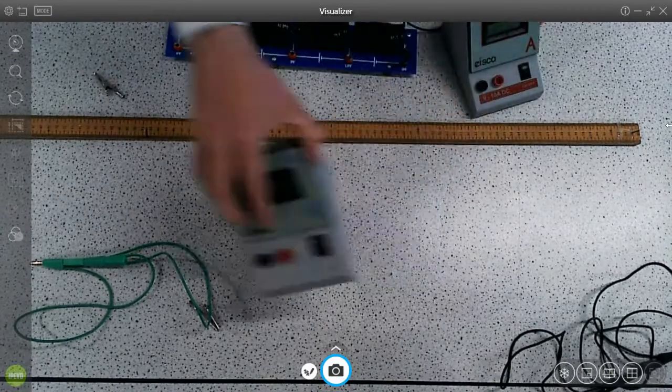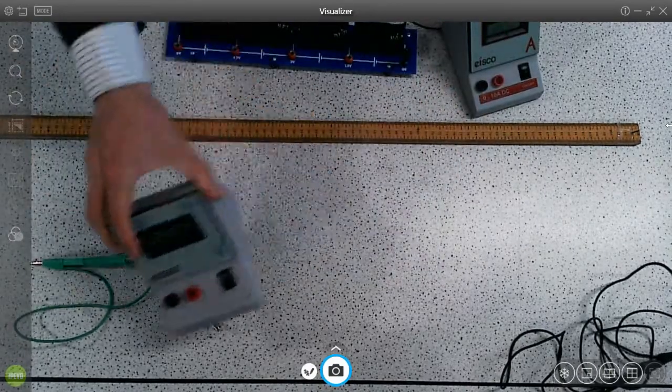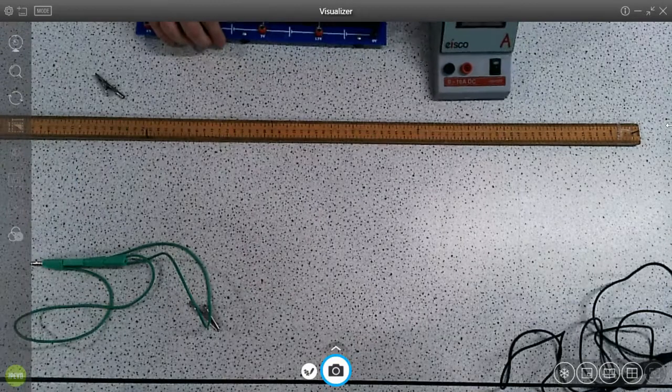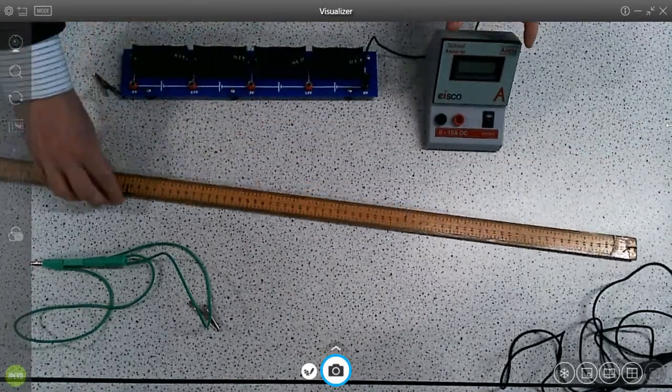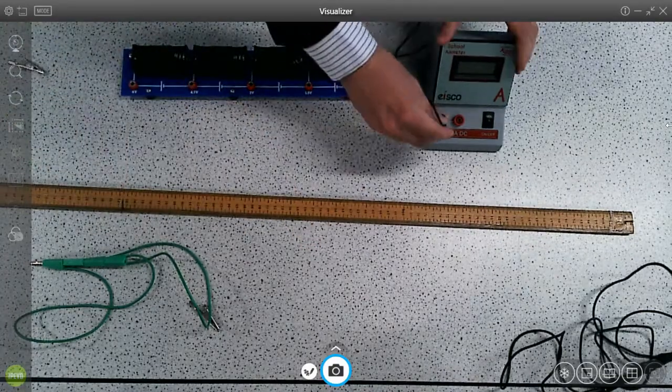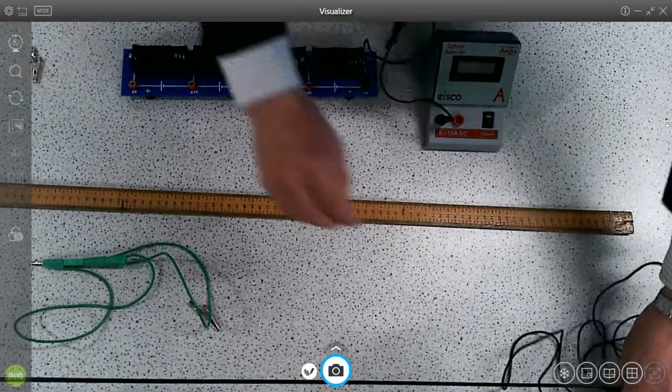So when you get students to set it up, get them to put the voltmeter to one side and just connect it up with the ammeter first and the wire. So we've got one loop that we're going to make, one circle with all of this in.